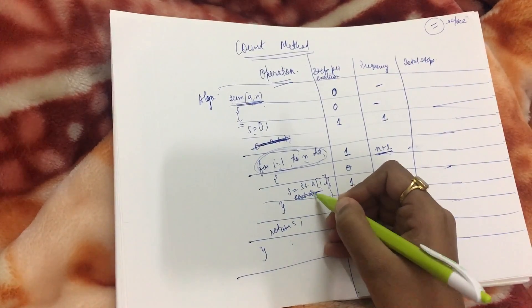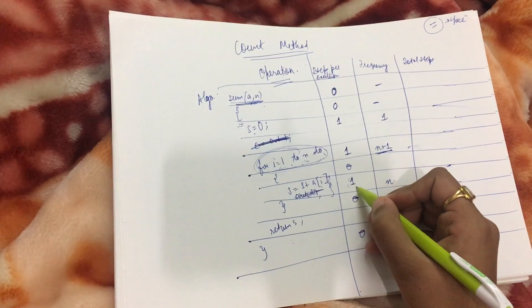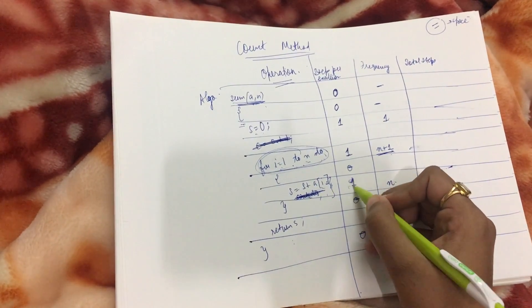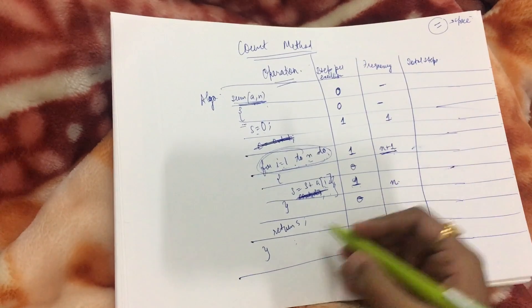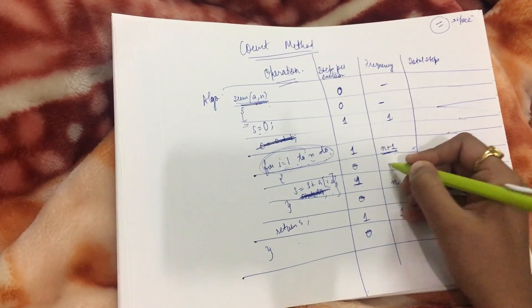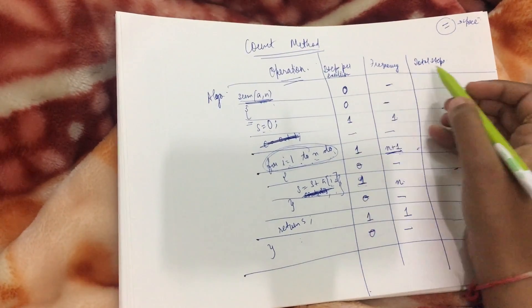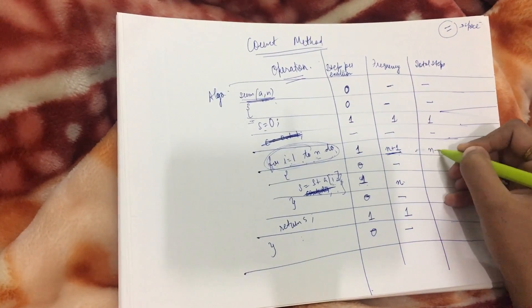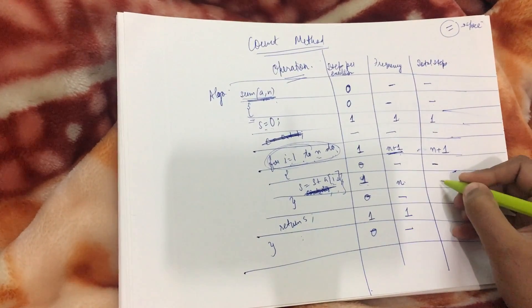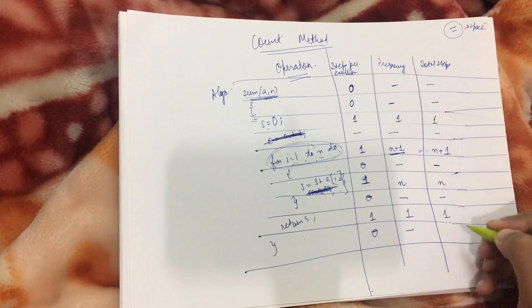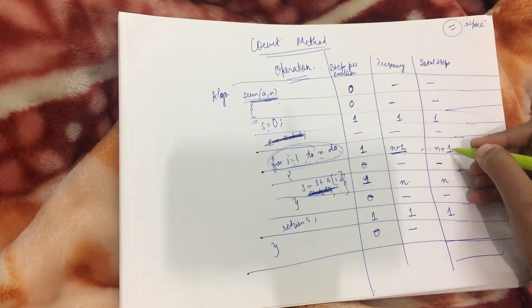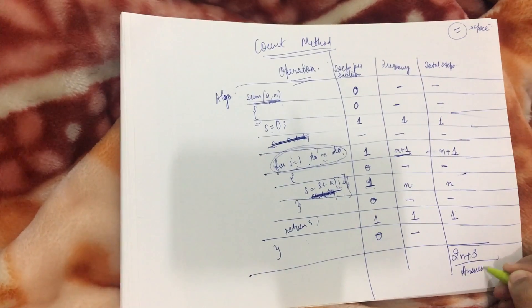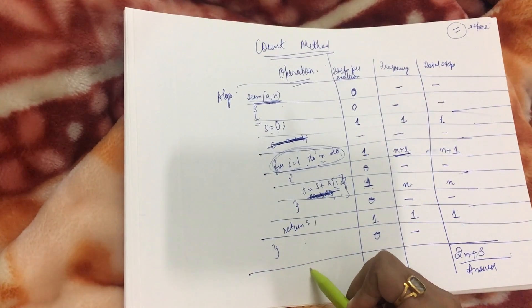Now we count the number of total steps. Null here, one, then n plus one, then n, then one. That sums up to 1, 2, 3, 2n, 2n plus 3. So that is your time complexity for this given algorithm. That's all about the video. We'll discuss the asymptotic notations in the next presentation.